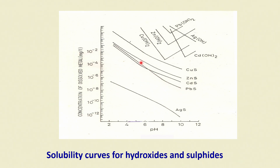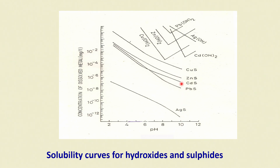For lead sulphide, around pH 3, solubility is approximately 10⁻¹ mg/L. For zinc, cadmium, and lead sulphides, most are in the 10⁻¹ range around pH 3. But as alkalinity increases to around pH 10, solubility decreases to 10⁻⁴ to 10⁻⁸ level — the ppm level — at which these salts are not so dangerous.